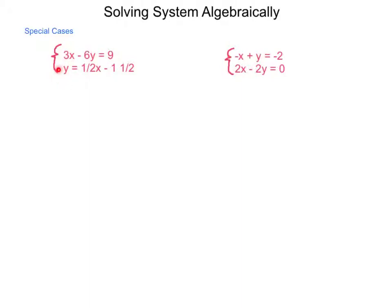I'm going to solve this by substitution, simply because I already have one of my variables completely isolated. So substituting this into the first equation, I have 3x - 6 times ((1/2)x - 1.5) = 9. Distributing, I end up with 3x - 3x + 9 = 9. Simplifying on the left-hand side, 3x - 3x = 0, so all I'm left with is 9 = 9. You notice in this equation there's no variable, and I have a sentence that is true. 9 is indeed equal to 9.